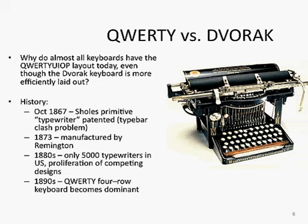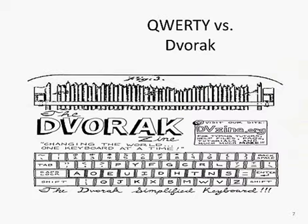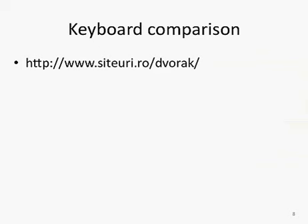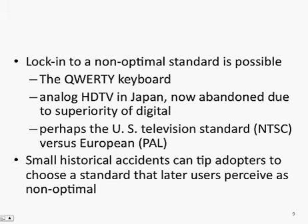In the 1890s, the QWERTY four-row keyboard became the dominant innovation. The Dvorak keyboard is laid out differently — all the vowels are on the middle row under the left hand, and the most commonly used consonants are under the right hand. At a keyboard comparison website, you can see that Dvorak results in fewer finger reaches from the home row to the top or bottom rows, likely allowing faster typing than QWERTY. However, the lock-in to QWERTY took place because it did what it needed to do at the time, and now it's so ingrained that Dvorak can't challenge it.